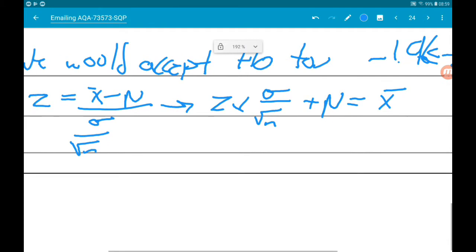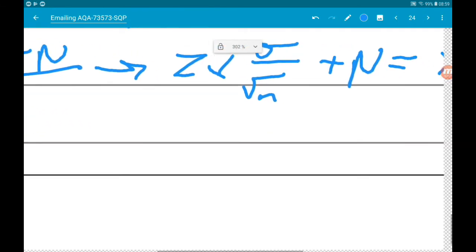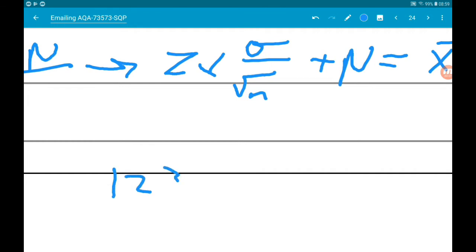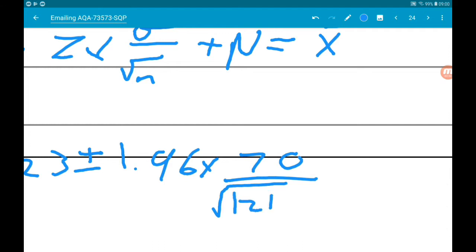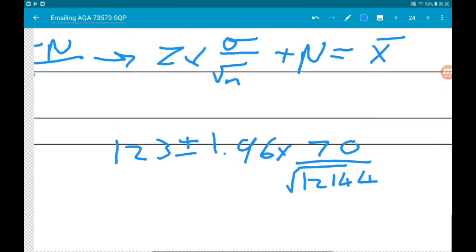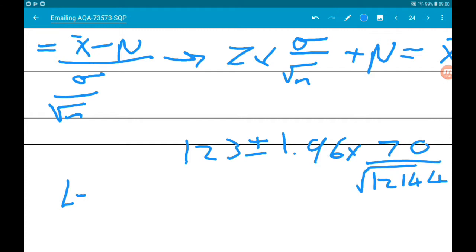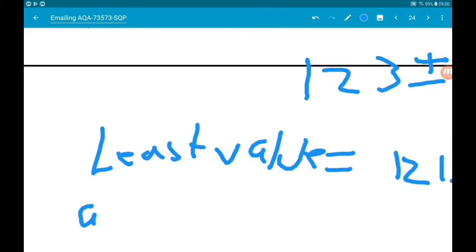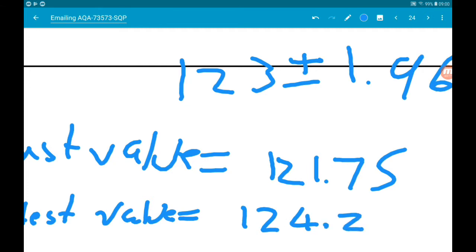Now what we can do here is rearrange this and get that z times sigma over root n plus mu is equal to x bar. So if we substitute our numbers in, mu is 123, so let's put that first. So we get 123 plus or minus 1.96 times 70 over root 12,144. So that gives us our least value is 121.75 and our greatest value would be 124.25. Cool.